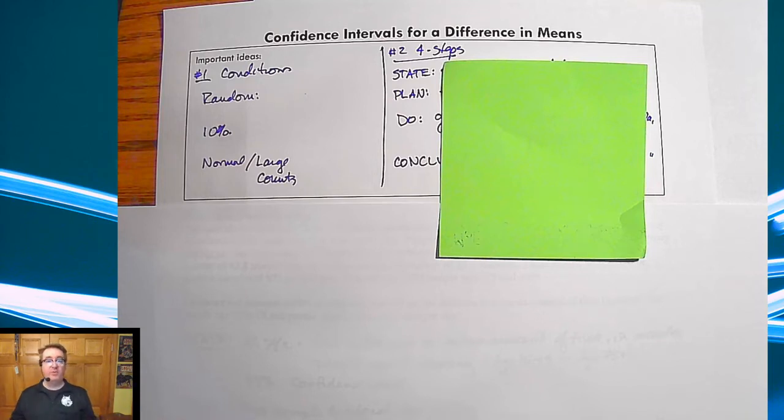Welcome back. We're going to formalize confidence intervals for difference of means. Nothing here really should be surprising because we've already done something similar to this with difference of proportions. So we're just going to point out a couple of things and then do an example, and hopefully you'll be like, yeah, I can do this, this makes sense.